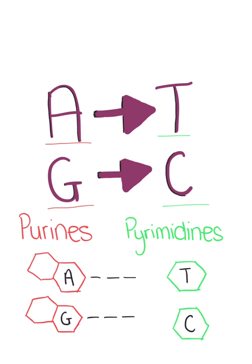Purines always bind to purines. To help you remember which base is which, think that thymine has a Y in its name and cytosine also has a Y in its name, and both of these are pyrimidines.